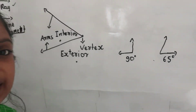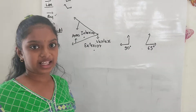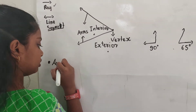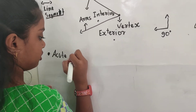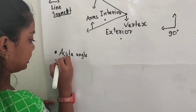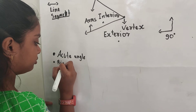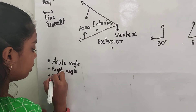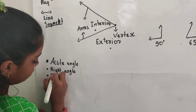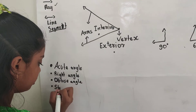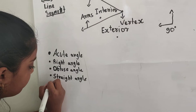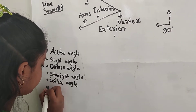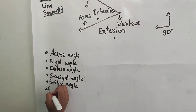Now, let us see the types of an angle. Number 1 is acute angle. Number 2 is right angle. Number 3 is obtuse angle. Number 4 is straight angle. Number 5 is reflex angle. Number 6 is complete angle or full angle.